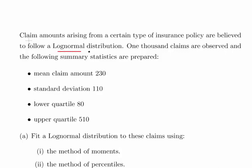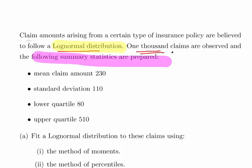In this presentation we're going to look at log-normal distribution. Claim amounts arising with a certain type of insurance policy are believed to follow a log-normal distribution. 1000 claims are observed and summary statistics are prepared. The mean claim amount is 230, the standard deviation is 110, the lower quartile Q1 is 80, and the upper quartile Q3 is 510.